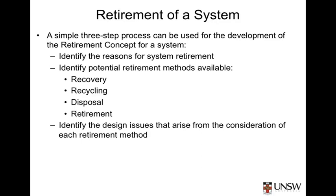The next step is to identify, for those reasons for retirement, what the options for retirement are actually going to be — the method of retirement. For example, there are a number of options. The system, or its elements, may be able to be recovered — that is, reused, or refurbished, or remanufactured in some way. The complete system may be able to be reused in a second life cycle, in its original role, or in a diminished role.